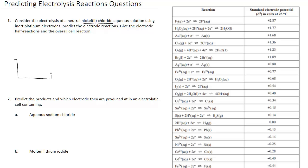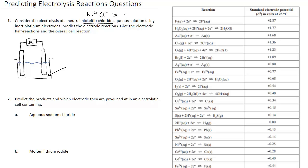We have an electrolysis reaction taking place. We've got our electrodes, our electrolyte solution, and our external circuit — a DC power supply providing the electrons. The solution contains nickel chloride: nickel has a plus 2 charge, so it's Ni²⁺ and Cl⁻, giving us nickel chloride overall.